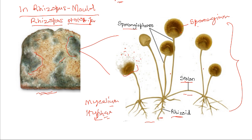This swelling is the sporangia and it produces spores. When the sporangia matures, it changes from grey to black due to the formation of spores within. When fully mature, the sporangia bursts, releasing the spores. Each spore is unicellular and is carried by wind or water. Where the spores land, if the substrate is conducive, the spores germinate and give rise to another mycelium.